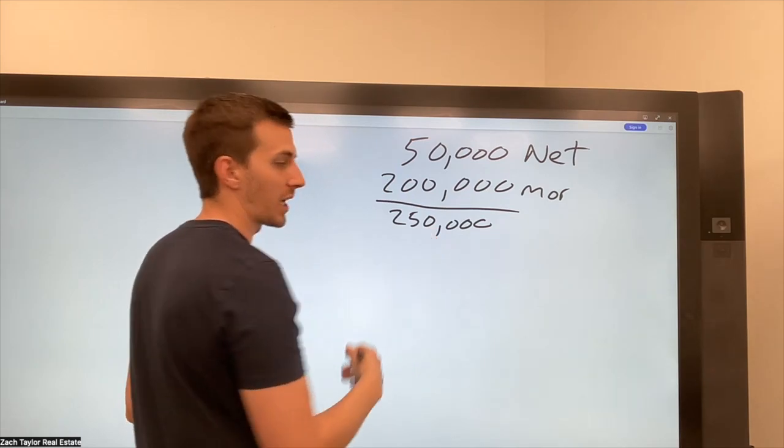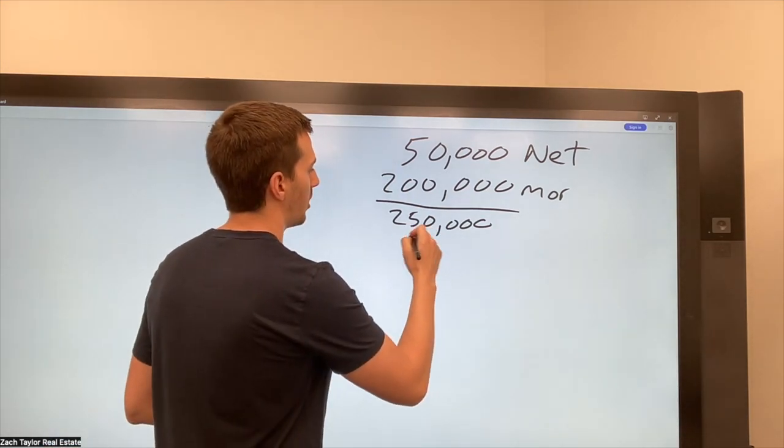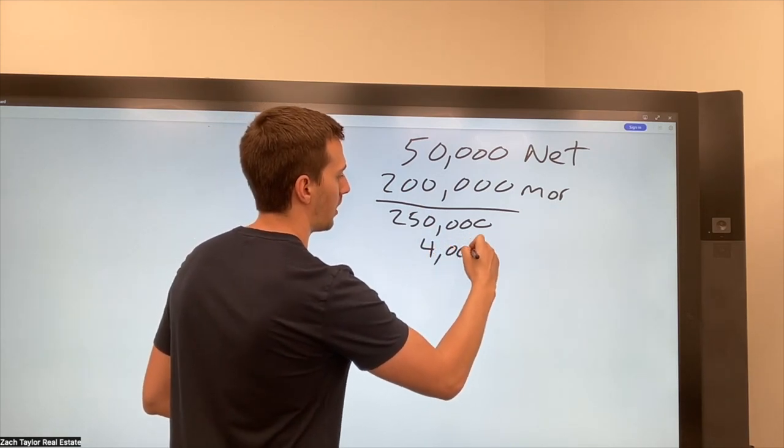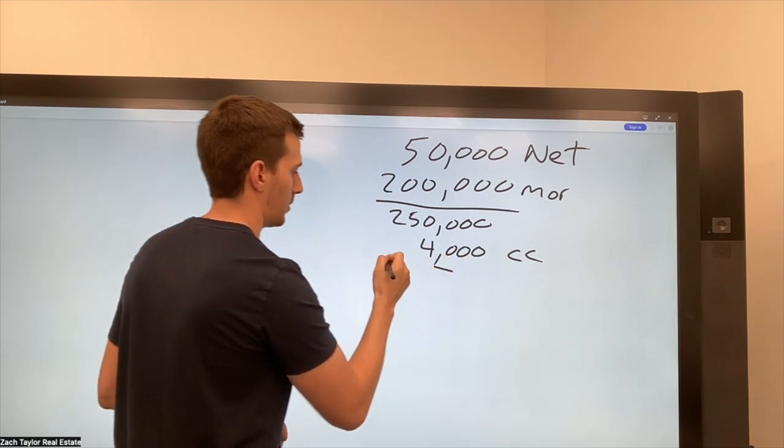Next is going to be our closing costs. So again, we called our title company. They gave us an estimate. We have an estimate sheet. So let's say again, it's another $4,000 in closing costs.